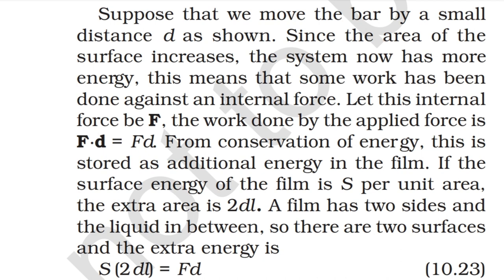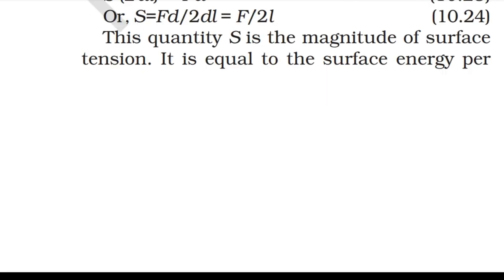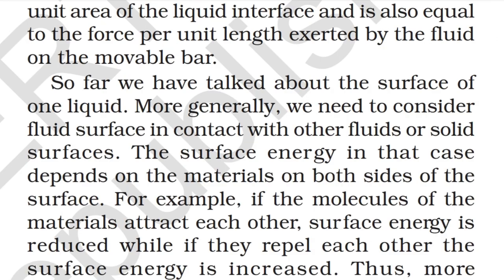If the surface energy of the film is S per unit area, the extra area is 2dL (a film has two sides), so extra energy = S·2dL = Fd, giving S = F/(2L). The quantity S is the magnitude of surface tension — equal to the surface energy per unit area, and also equal to the force per unit length exerted by the fluid on the movable bar. More generally, the surface energy depends on the material on both sides of the interface: if molecules attract each other surface energy is reduced, if they repel each other it is increased.